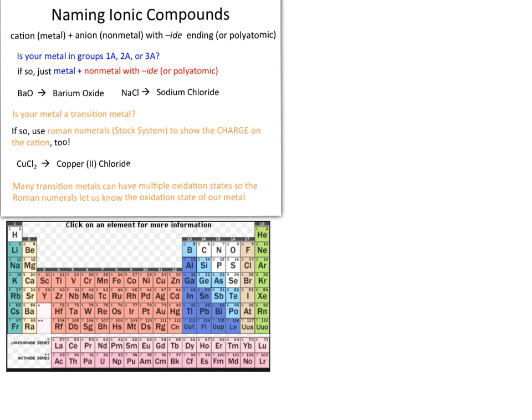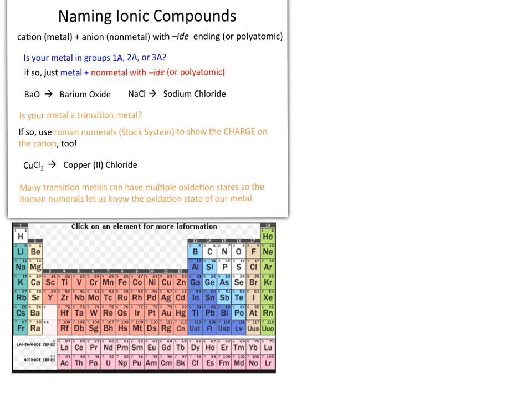Now the next thing you need to look at is your specific example — each one needs to be considered individually. Focus on the metal component. If your metal is from groups 1A, 2A, or 3A, you're going to use a very simple, straightforward approach: write the metal or the cation first, then write the non-metal and change the -IDE ending.